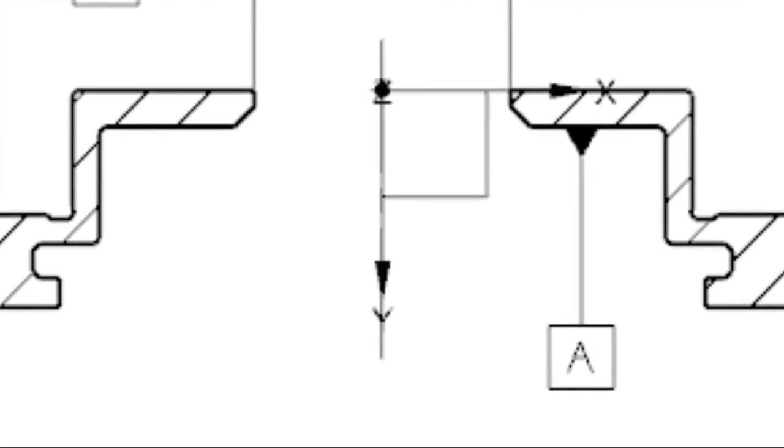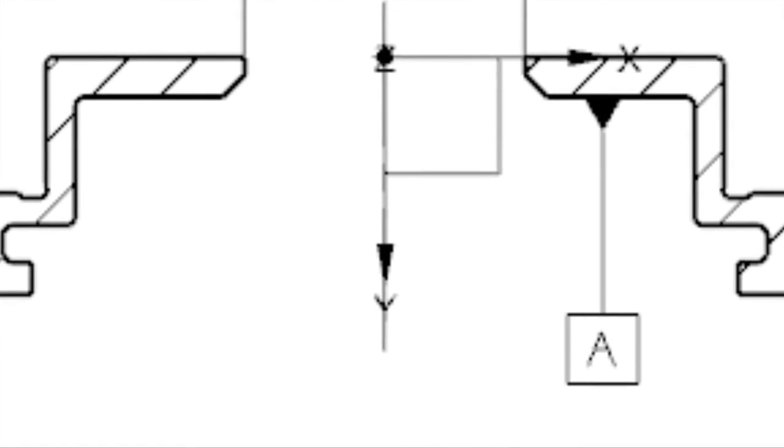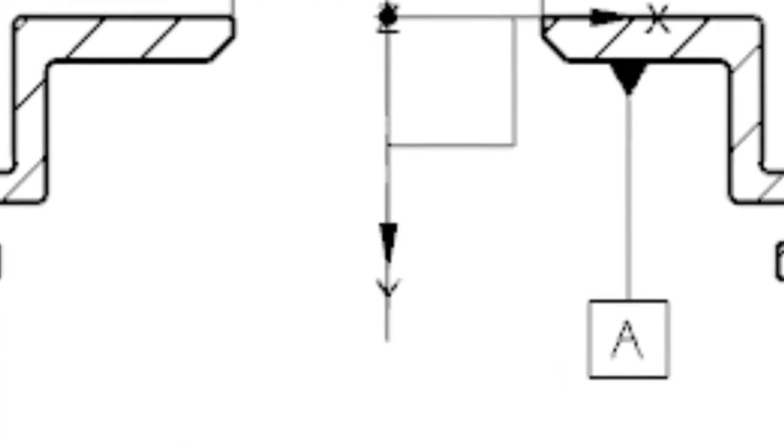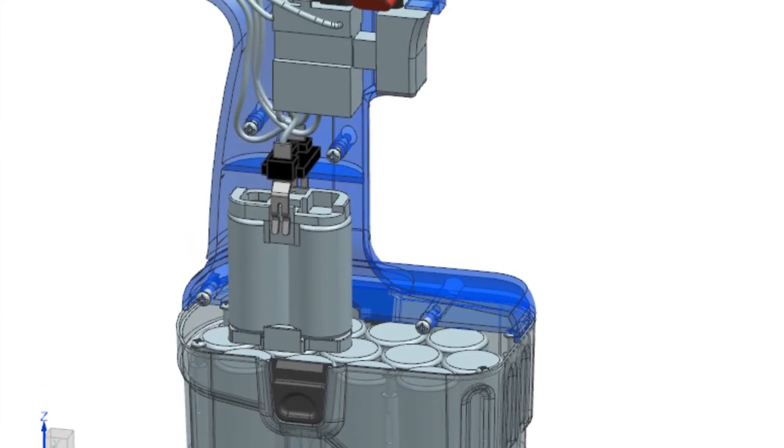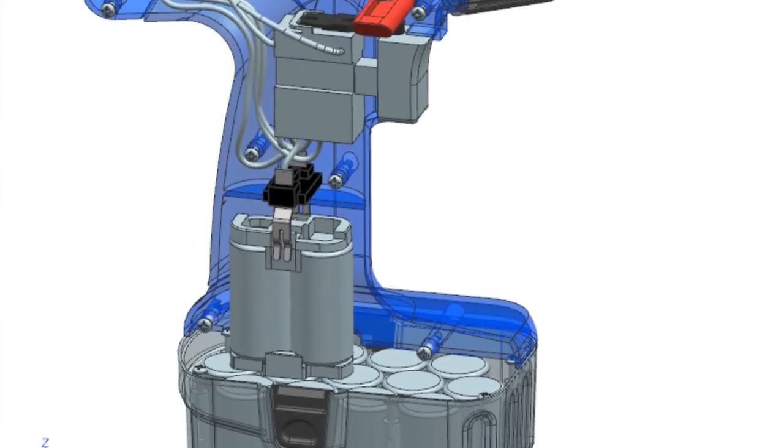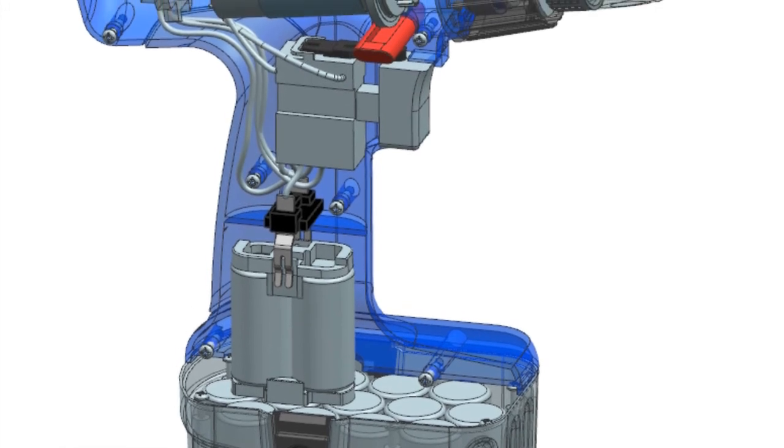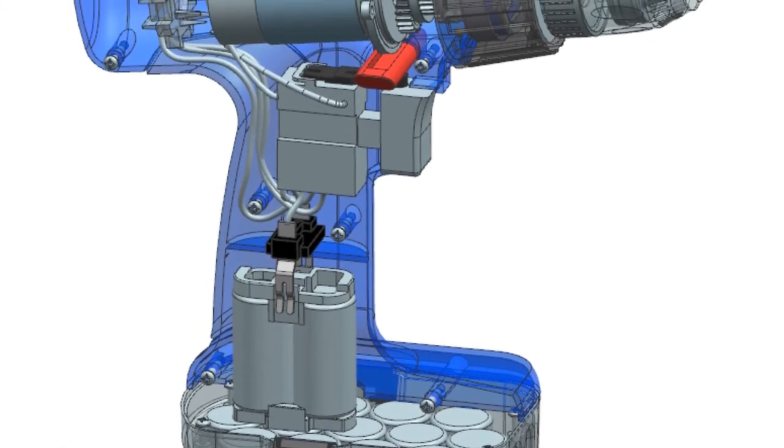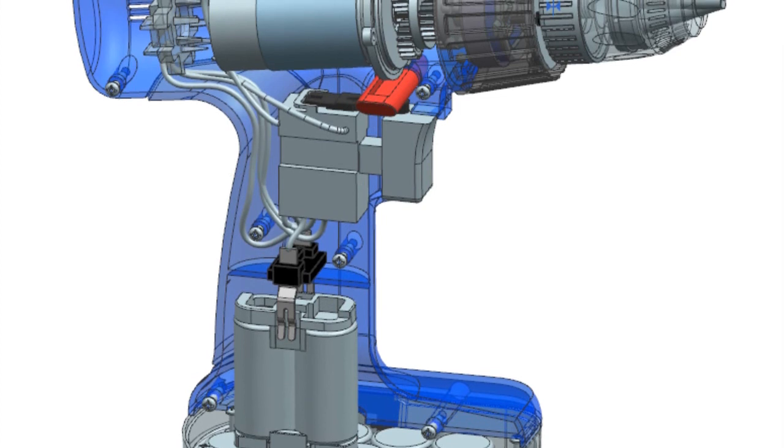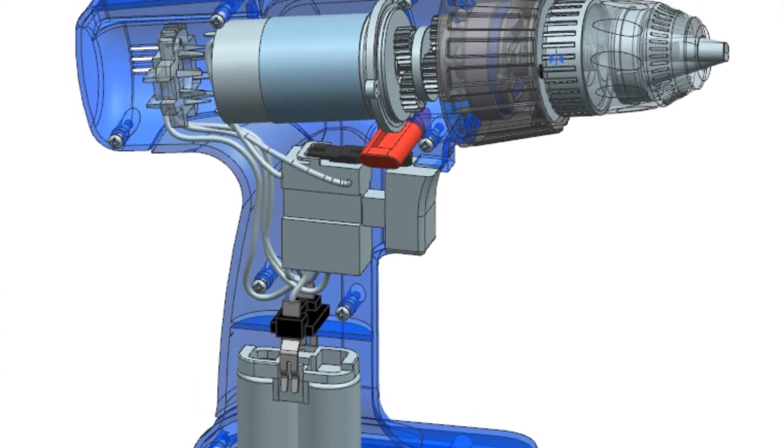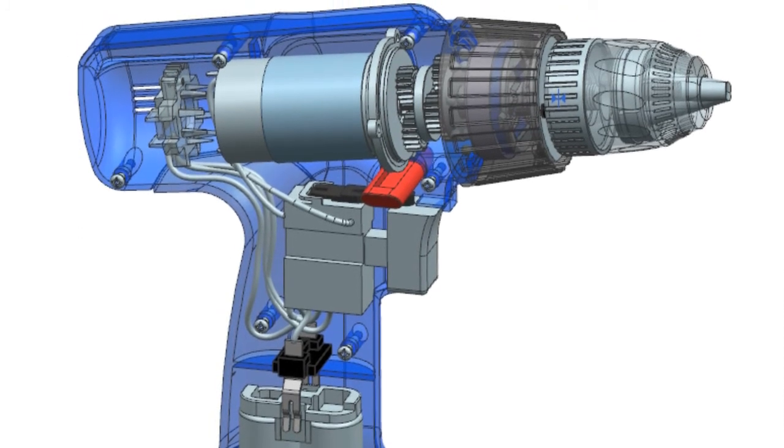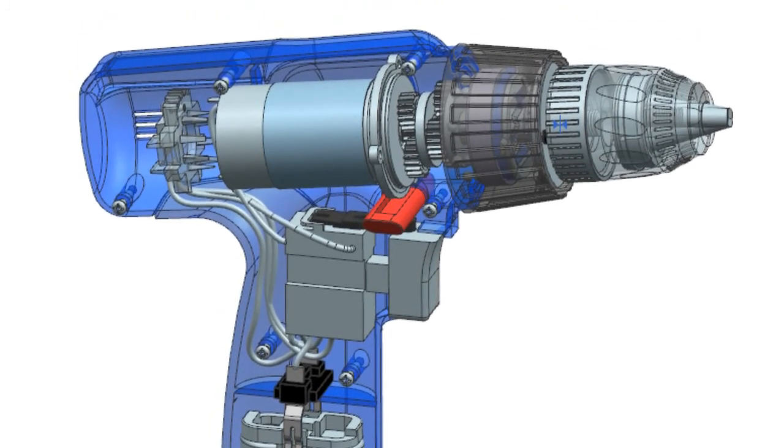Now that we have discussed datums in modeling and drafting, let's briefly talk about assemblies. Maybe we actually should have started here because the assembly often dictates the function of the part. For example, where parts meet or fit together. As you might suspect, there is a corresponding function in assemblies to each of the concepts we have shown in how datums are used in modeling and drafting.